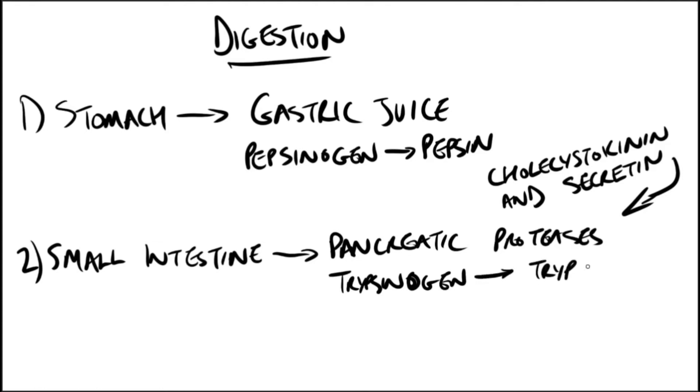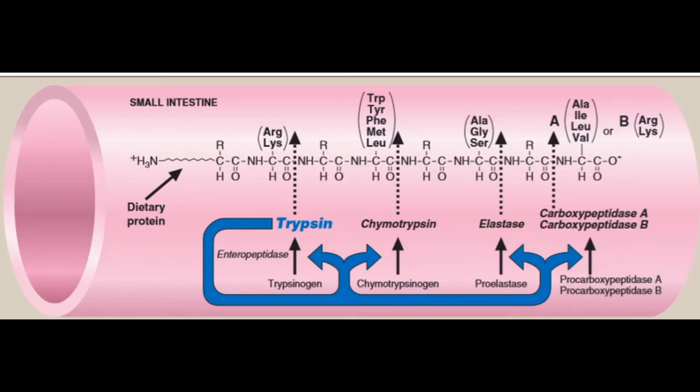Enteropeptidase unleashes a cascade of proteolytic activity because trypsin is the common activator of all the pancreatic zymogens. Once trypsin is activated, it activates chymotrypsinogen to chymotrypsin, proelastase to elastase, and procarboxypeptidases A and B to carboxypeptidases A and B.